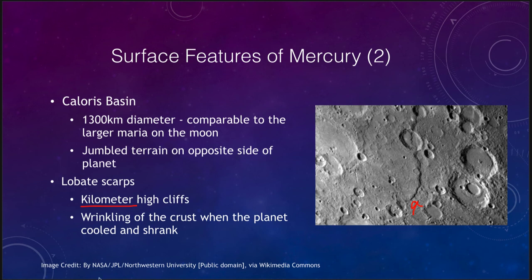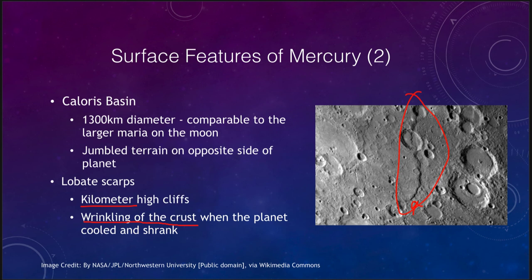These scarps are believed to be wrinkling of the crust. Essentially, the planet would have started to cool: the exterior would cool while the interior remained molten, and as most objects cool they tend to get smaller. As the interior continued to cool it would shrink, leaving empty space, and the crust would collapse back down onto it — giving us these scarps. They are unique to Mercury, as far as we know. That is really the only place we see this specific type of feature called a lobate scarp.